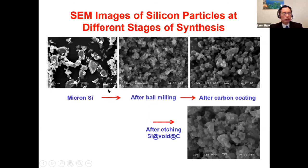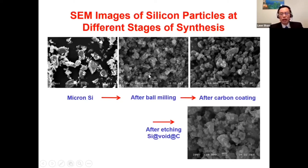Here I show SEM images of the silicon powder particle morphology and size. The starting powder is 10 microns in size; after ball milling it becomes 200 to 300 nanometers. After carbon coating and etching, morphology and size don't change much, because the coating is very thin — about 10 nanometers — and the etching only removes silicon from inside the coating.